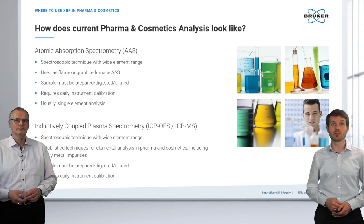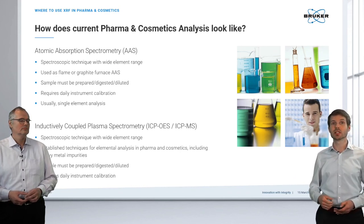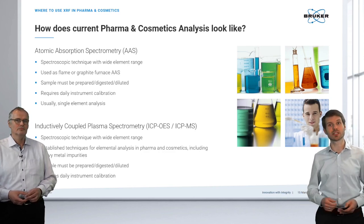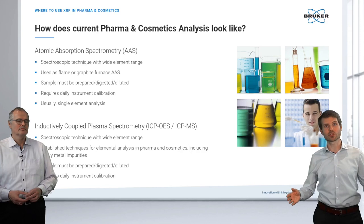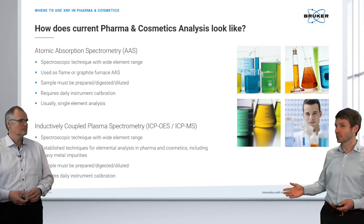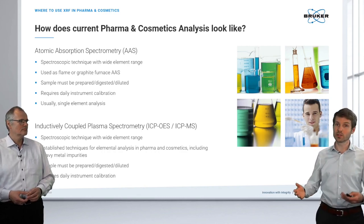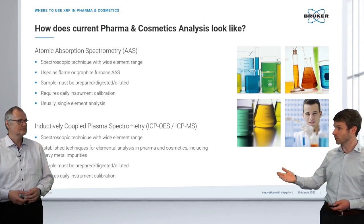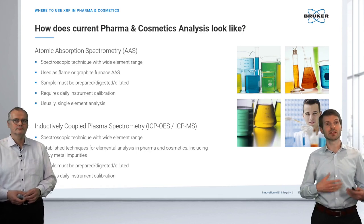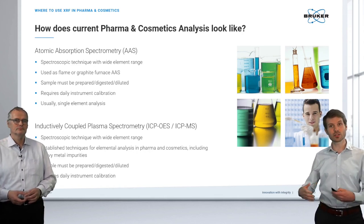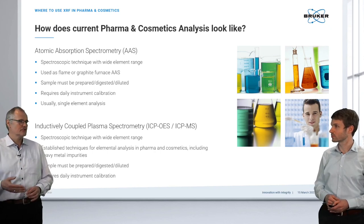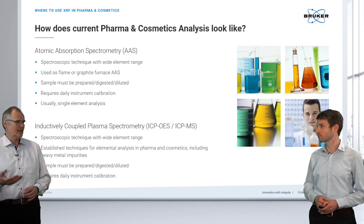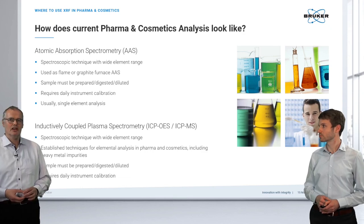Traditionally, elemental analysis in cosmetics and pharmaceuticals uses two types of technologies: atomic absorption spectrometry (AAS) or inductively coupled plasma spectrometry — ICP-OES or ICP-MS. These spectroscopic methods cover a wide range of elements and are well-established. However, samples need to be treated before measurement — diluted, typically dissolved first — and the instrument must be calibrated daily. There's a lot of work involved before getting the first result. Calibration and instrument warm-up require significant time and expertise, resulting in a high cost of ownership.